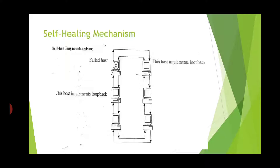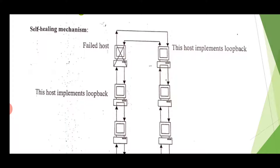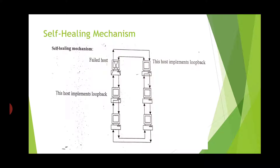Now we will see the cell filling mechanism in FDDI. As shown in the diagram, two token rings are used but during transmission only one is active and the other serves as backup. If the first ring fails to work, then automatically data is transmitted using the second ring. That is the first cell filling mechanism.